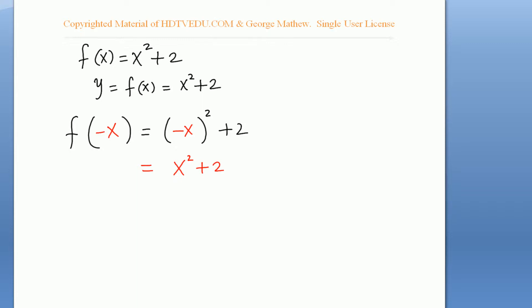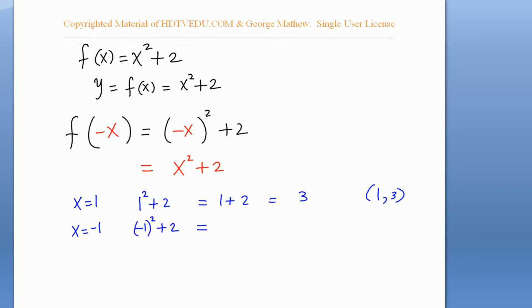This tells us it does not matter whether x is positive or negative — the y value remains the same. For example, when you put x equals 1: 1 to the power of 2 plus 2 gives 1 plus 2, which equals 3. So the point is (1, 3). When you put x equals negative 1: negative 1 to the power of 2 plus 2 gives 1 plus 2, which is also 3. As you can see, when you change 1 to negative 1, the output is still 3.